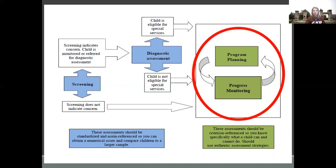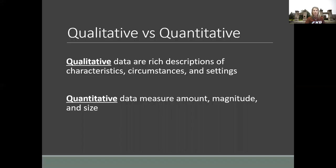In other words, observe children participating and engaging in activities throughout the day. This might be in the classroom or at home, participating with family, friends, extended family, etc. One of the first ways to do this is to measure both qualitatively and quantitatively, not using just one method. The use of both provides a more complete picture of the child's abilities.